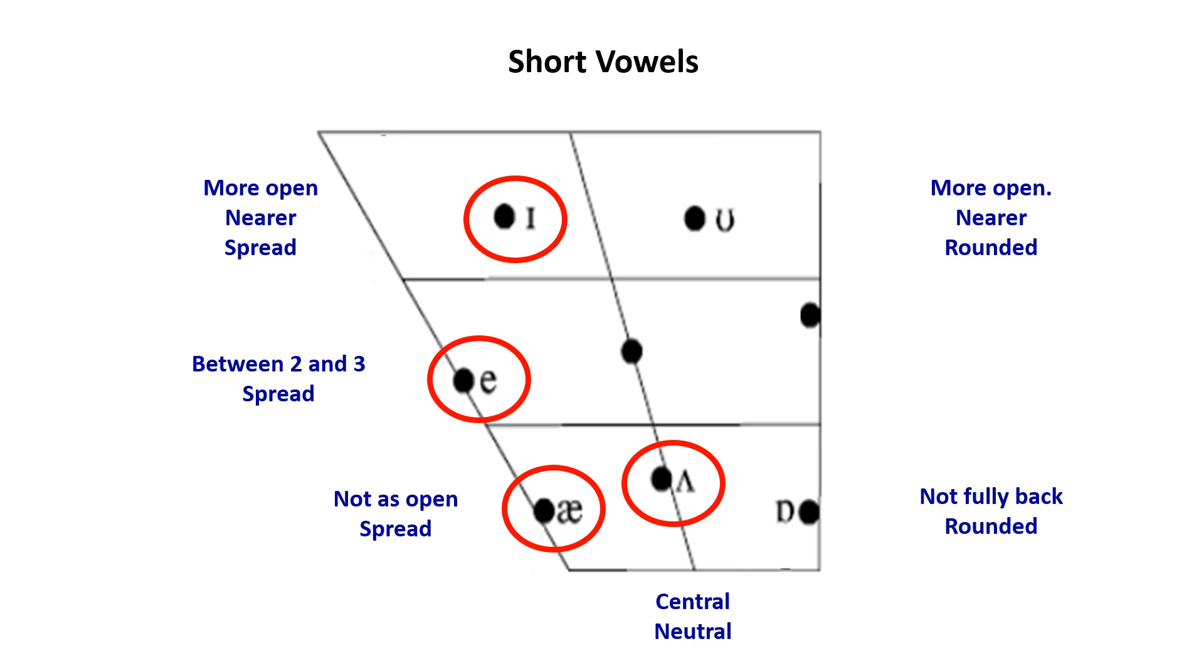More open than cardinal three, the lips are neutral. This vowel is not fully back, between cardinal five and six, the lips are rounded. This vowel is more open than cardinal eight, nearer to the center. The lips are rounded.